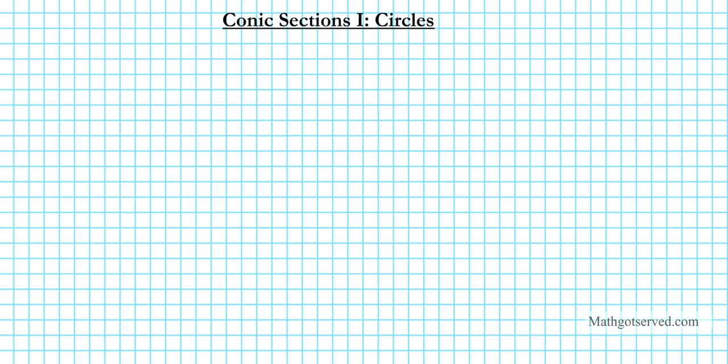Good day students. In this clip we're going to be going over the first set of conic sections, which is circles. We're going to be going over how to graph them, label the graph, and also state what the result means. So let's go ahead and write down the instructions for the questions.